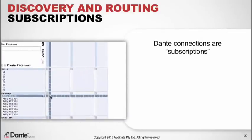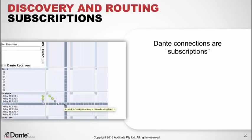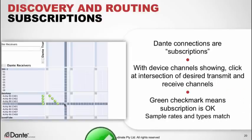In Dante, we call these connections subscriptions. We click the plus sign to show the transmitter channels on the device we want to get audio from, then click the other plus sign on the other device to show the receiver channels — this is our destination. This is really just a big spreadsheet: we can see all the available channels on every device and the intersections of those channels. In order to connect, our devices must be using the same sample rate and bit depth. These devices are both set to use a default 48 kHz and 24-bit depth. To subscribe a transmitter channel to a receiver channel, we simply click at the intersection on the grid — a green checkmark appears, and that means we're connected.